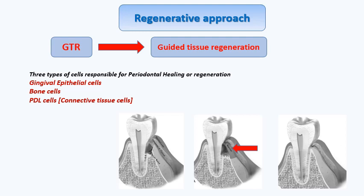There are epithelial cells found in the gingiva, bone cells that form the alveolar bone, and the periodontal ligament cells that form the connective tissue making the periodontal ligament fibers. When there is an irritant or inflammation, all three are affected: gingival inflammation occurs, the periodontal ligament cells are affected, the tooth may loosen, pocketing occurs, and with further irritation, bone resorption happens.